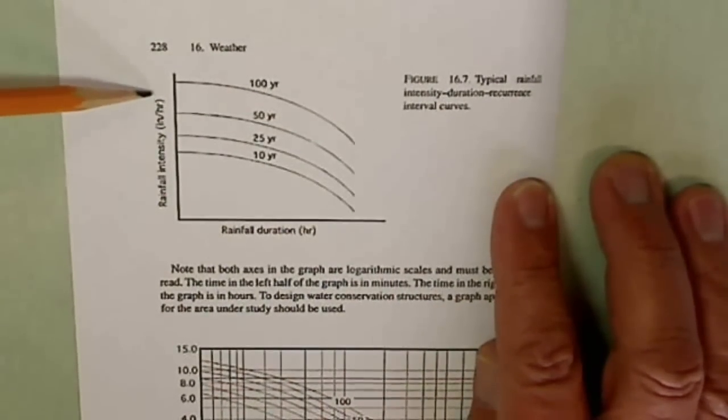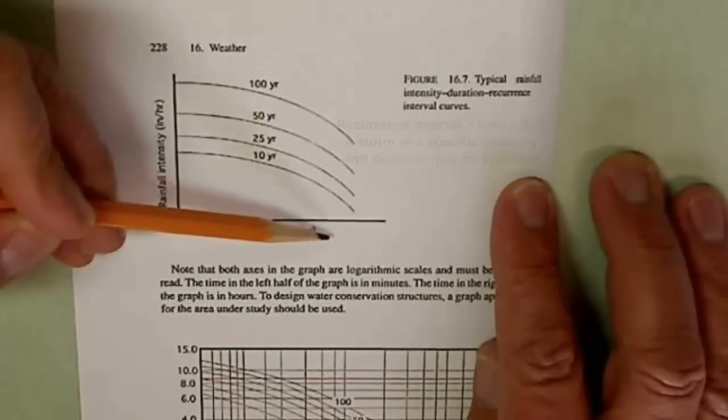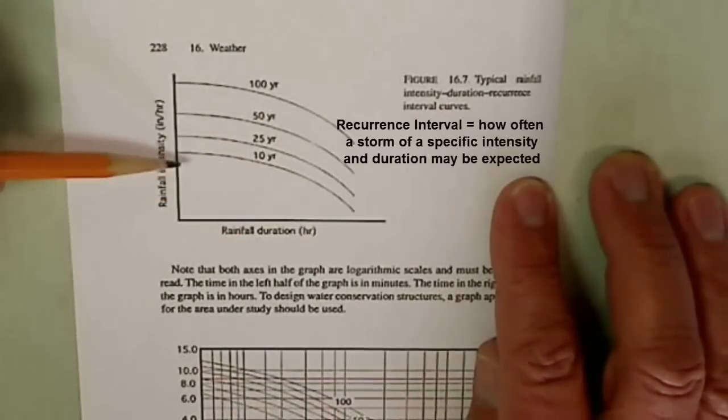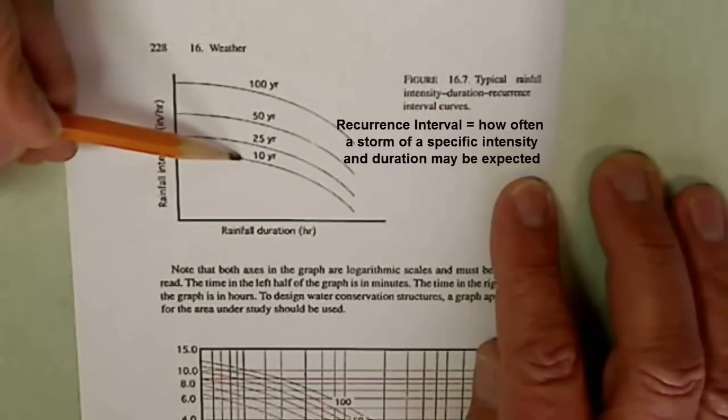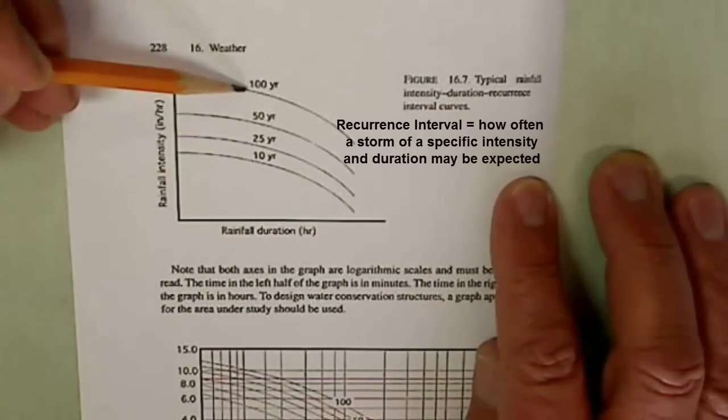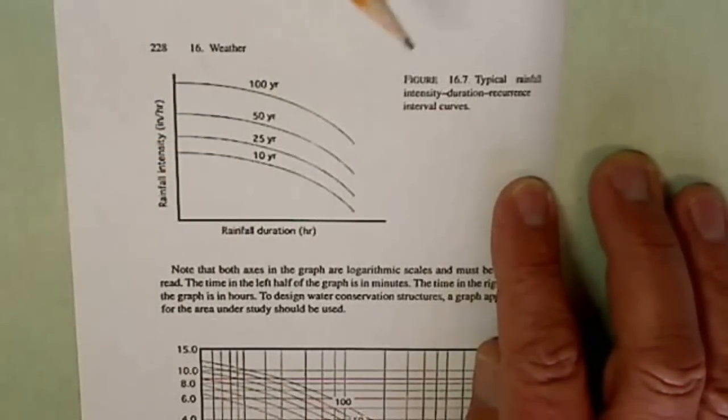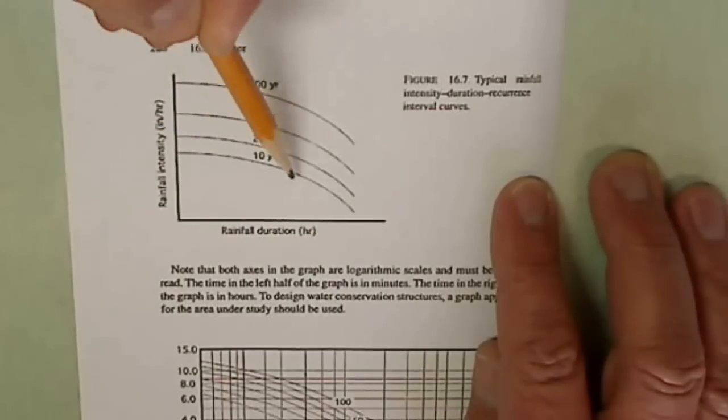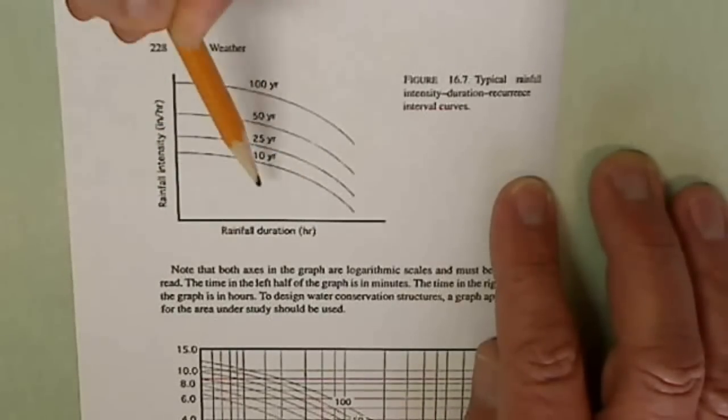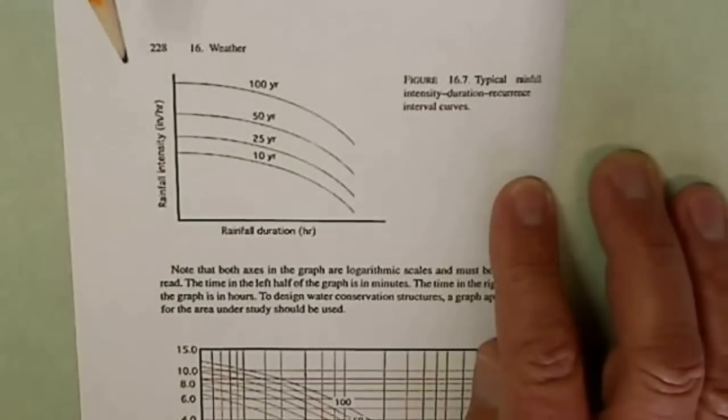We have rainfall intensity in inches per hour versus rainfall duration in hours. And you can see that we have these lines representing a 10, 25, 50, and 100-year storm. So as you would guess, it's much easier for a 10-year storm to occur once every 10 years than a 100-year storm, which would occur approximately only every 100 years.